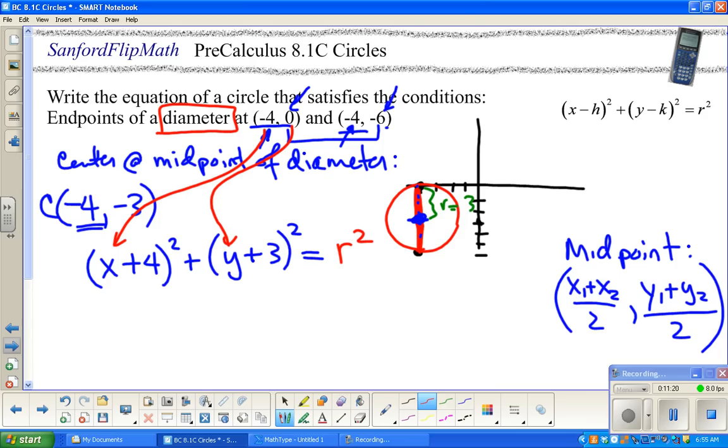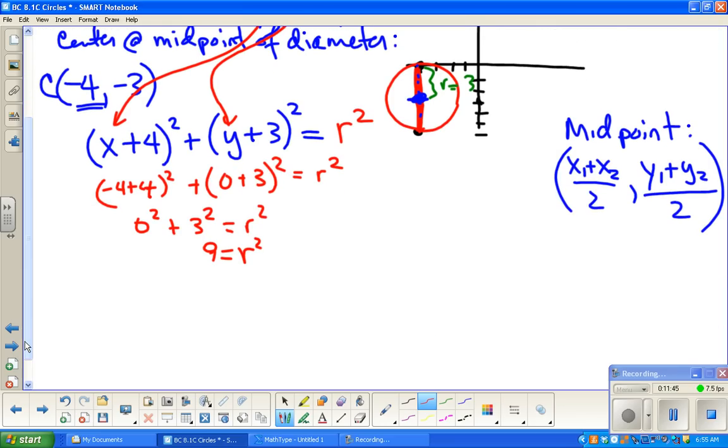I'm going to start building the equation. So, I have x minus the x value. Well, minus a negative 4 is really going to be plus 4. Y minus a negative 3 is really going to be plus 3, equals, well, what's the radius? Now, again, for this particular one, I think it's fairly easy to note that if we're going from 0 down to negative 3, the radius is 3. Let me also tell you, though, that if it's not so easy to spot it, you can put r squared there and then substitute a point.